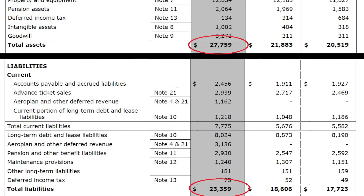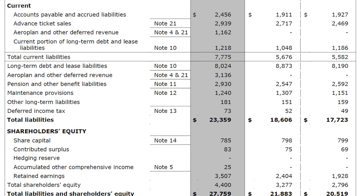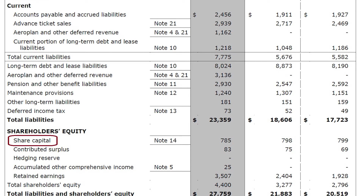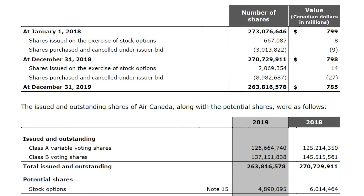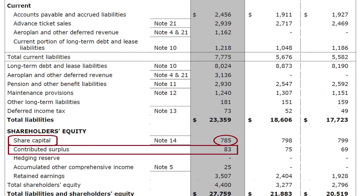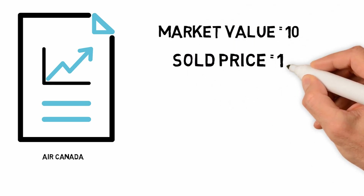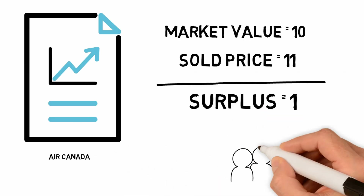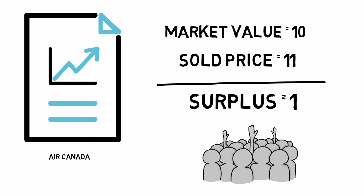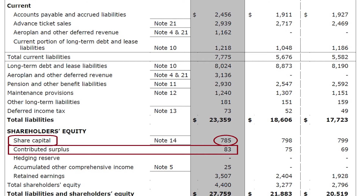Air Canada has more assets than liabilities, which is always a good thing. Now let's look at shareholders' equity. Share capital shows Air Canada has raised 785 million dollars by issuing shares. There is also contributed surplus of 83 million dollars — for example, if the market value of a share was 10 dollars but Air Canada sold it for 11 dollars, they made one extra dollar per share. Because of higher demand for the stock, Air Canada made 83 million dollars above the par value of the shares.